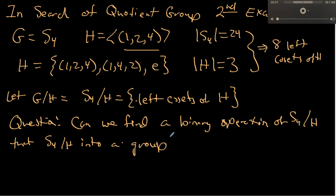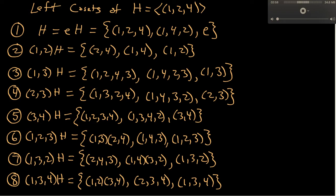The first thing we have to do is find the list of all the left cosets. Stop the video and calculate all 8 left cosets of H. Hopefully you've done that — you should get this list of 8 cosets. Your names for these cosets might be slightly different. For instance, the second left coset could have been called (24)H or (14)H, because any element of a coset can serve as its representative.